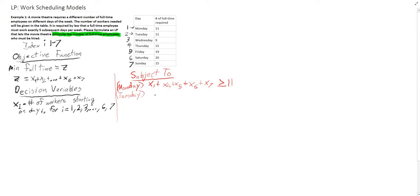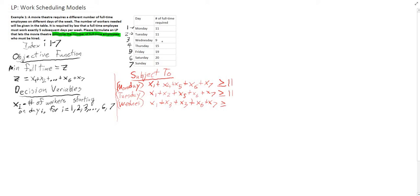We're going to define it for each day. For Tuesday: someone working on Monday, working on Tuesday, but not starting on Thursday — we know they were working on Friday, Saturday, and Sunday. That minimum must be greater than the required value. For Wednesday: someone working on Monday, Tuesday, and starting on Wednesday, plus those on Saturday and Sunday — that has to be greater than 9.